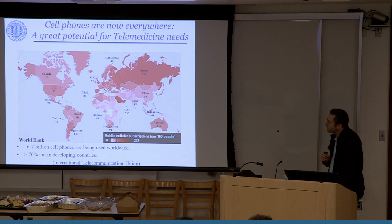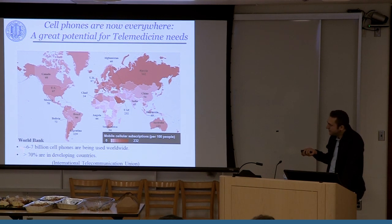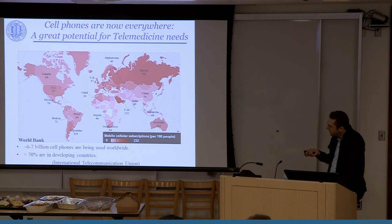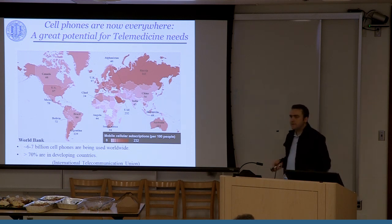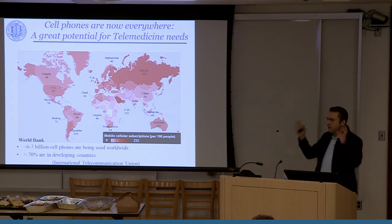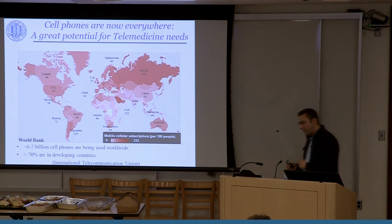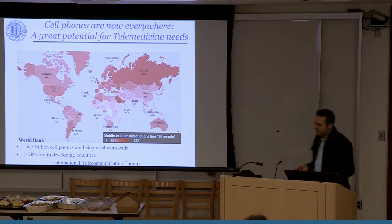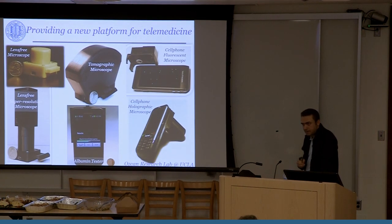We also like cell phones because of their huge volume — literally 7 billion cell phone subscribers, and more than 70% of these cell phones are being used in developing parts of the world. We have fantastic imagers, fantastic hardware, optical hardware as well as computational elements, graphics processing units in our cell phones. They work almost everywhere, cost-effectively in a compact form. This creates a unique infrastructure for biomedical imaging, sensing, and diagnostics.